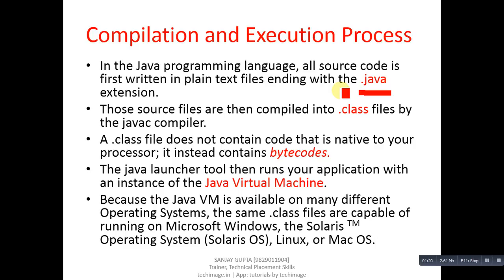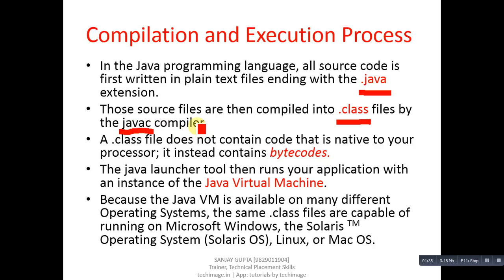Those source files are then compiled into dot class files by the javac compiler. The name of the compiler available in Java is javac, and after compilation the file received has an extension known as dot class.